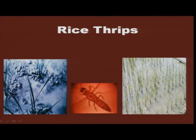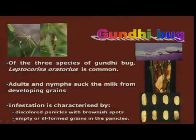Rice thrips is another important sucking pest, particularly in the early stage. Because of its sucking nature, we find the growth of the plant is considerably reduced.